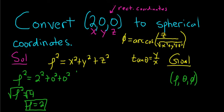Let's find theta. To find theta, we'll use this formula. The tangent of theta is equal to y over x. So y is 0, so it's going to be 0 over 2, which is just 0.